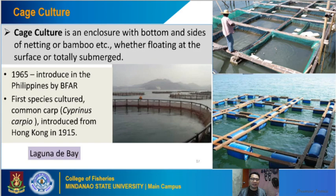There are also other types of cages in aquaculture — some utilize bamboos as frames with netting on the sides. In more advanced aquacultures, blue drums are used as floaters and framings instead of bamboo.